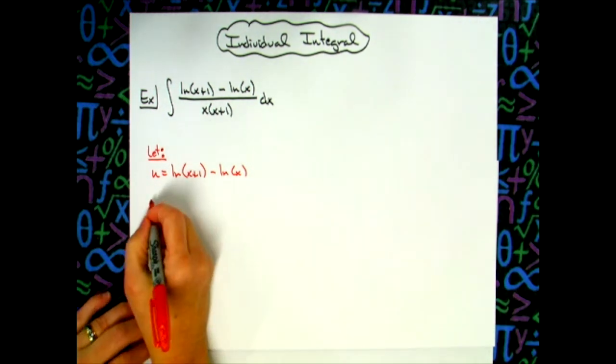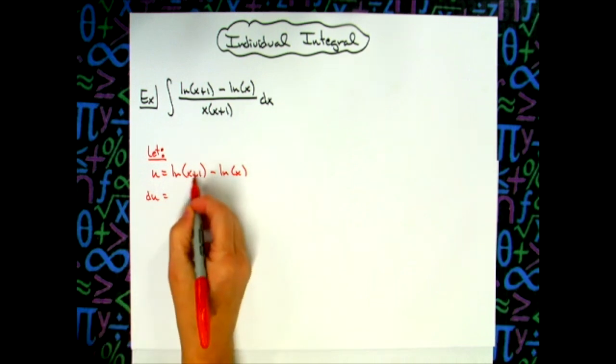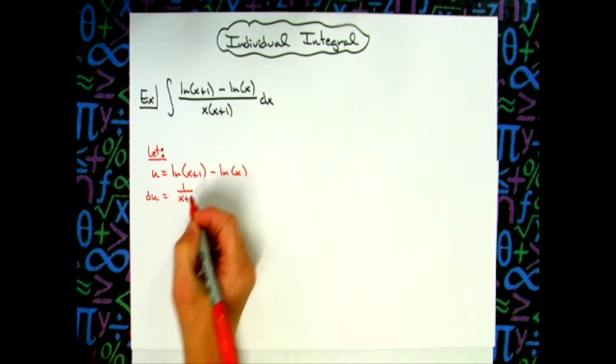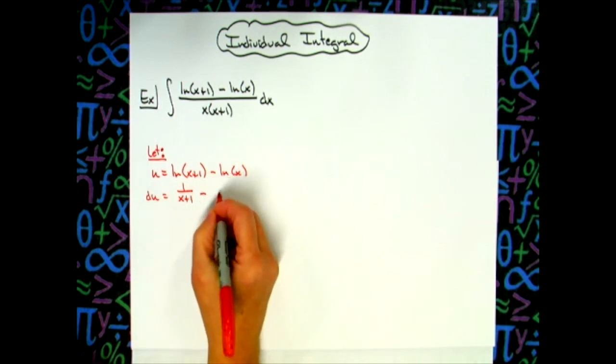Now, at this point, we're going to take the derivative of both sides. So we'll have du is equal to, again, u prime over u is going to give me 1 over x plus 1 and then minus, taking the derivative of that natural log function, u prime over u will give me 1 over x dx.